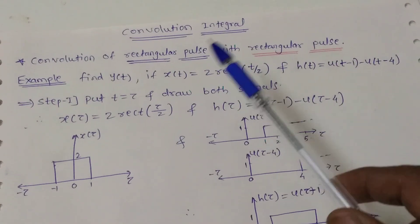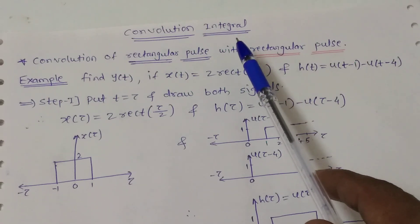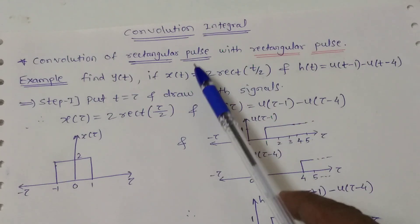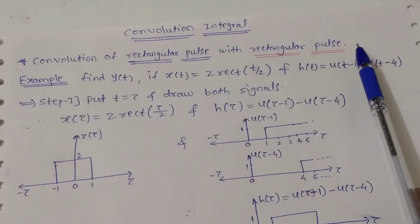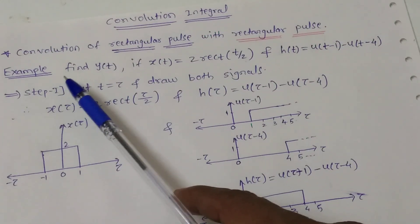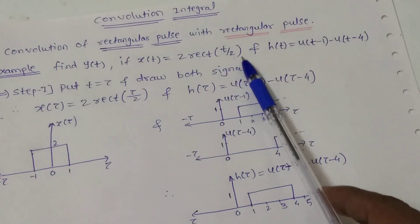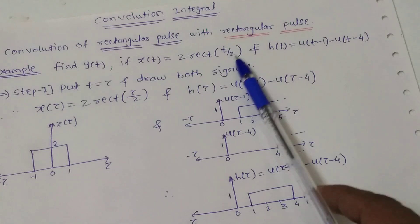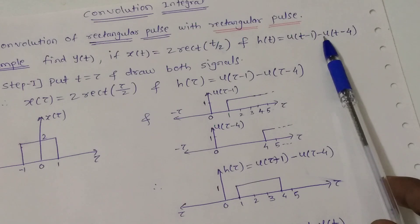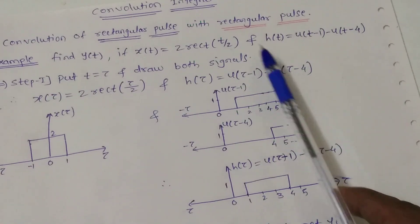In this video we will see how to find output y(t) with the help of the convolution integral method when both signals are rectangular pulses — that is, x(t) is a rectangular pulse and h(t) is also a rectangular pulse. We will see this with the help of one example: find y(t) if x(t) = 2·rect(t/2), which is a rectangular pulse with amplitude 2 and width 2, and h(t) = u(t-1) - u(t-4).